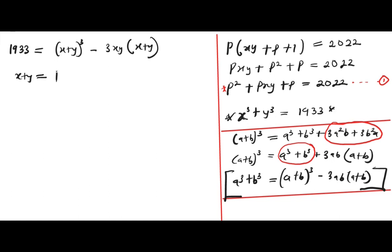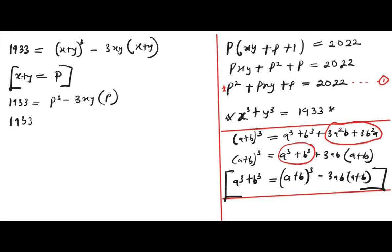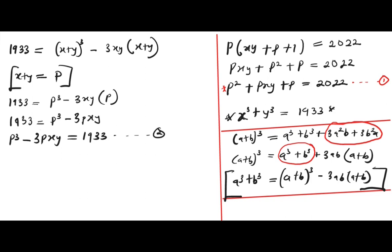Remember that x plus y was set equal to p. Multiplying out, 1933 equals p cubed minus 3p·xy. Rearranging, we get p cubed minus 3p·xy equals 1933. Let this be equation 2. We now have equation 1 and equation 2.